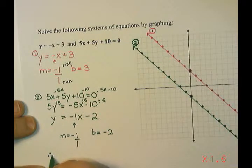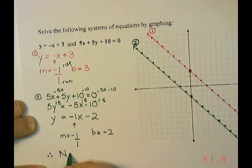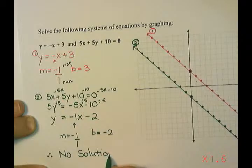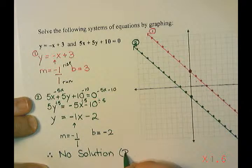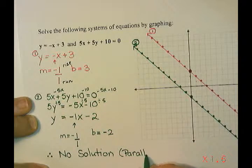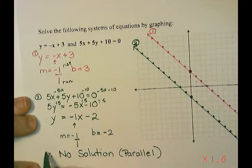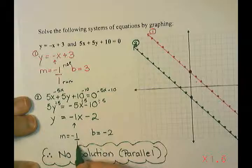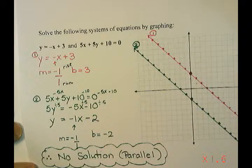So I use my three little dots for therefore, and then I write no solution. And if you want, we can write that they're parallel. But no solution is really all that's required. And that's solving linear systems by graphing.